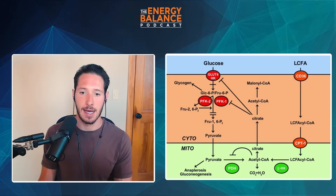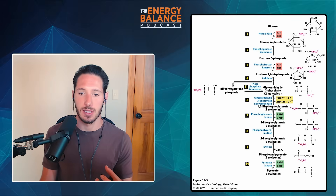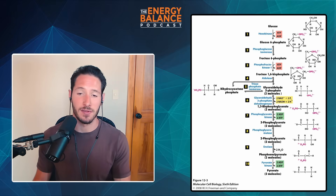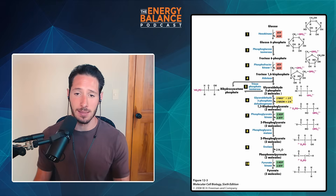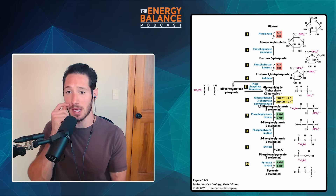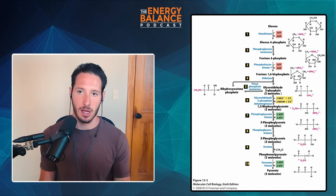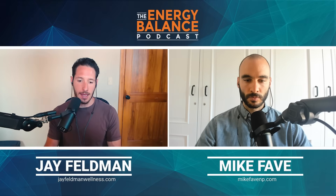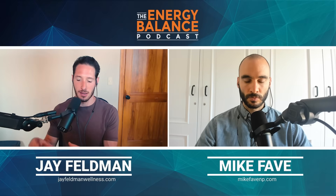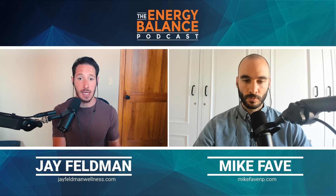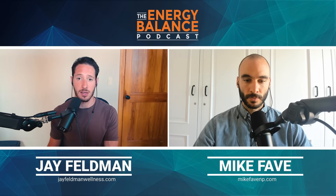Excess acetyl-CoA and excess citrate result from beta-oxidation. The excess acetyl-CoA blocks pyruvate dehydrogenase, and that citrate in the cytosol blocks phosphofructokinase — the rate-limiting step of glycolysis — and also blocks the uptake of glucose. There's also the glyceraldehyde-3-phosphate dehydrogenase step farther down glycolysis, where a low NAD+ to NADH ratio inhibits that step as well. All these mechanisms are a way of saying: when the engine is burning fat, it blocks the utilization and uptake of glucose — a huge component of what we see in a state of insulin resistance.